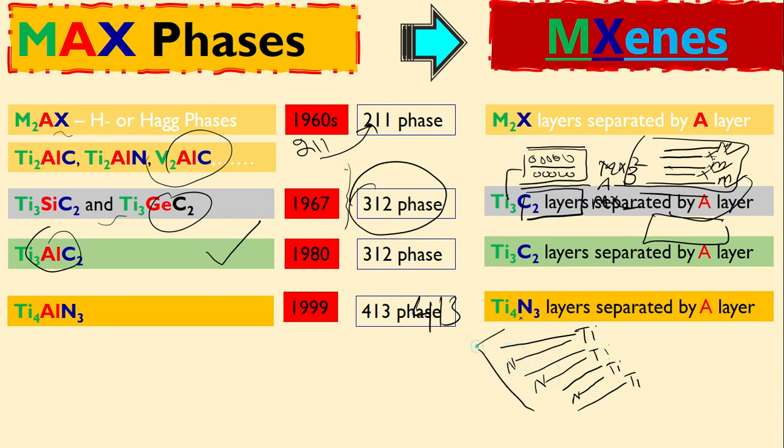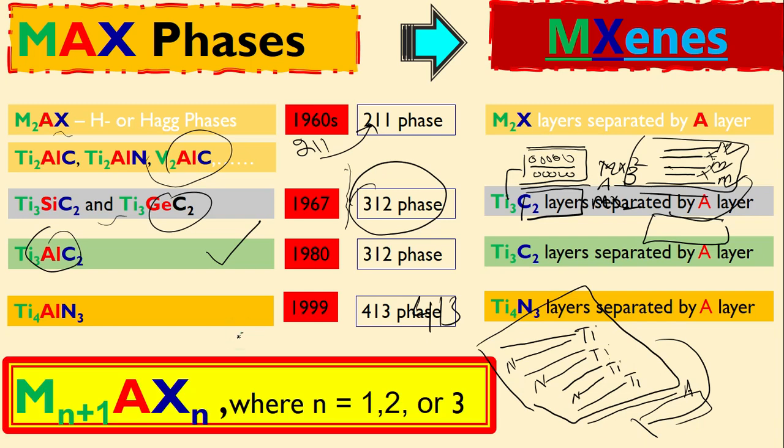So this will make one layer here. This will be separated by A here. This is now A here and similarly we have the same layer here. So this is how this formula was discovered. After this phase, this is basically the birth of the formula. And this we call MAX phases.